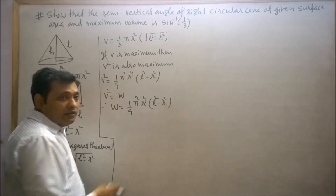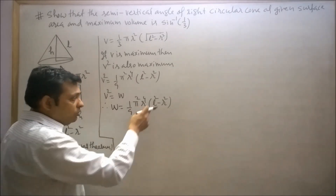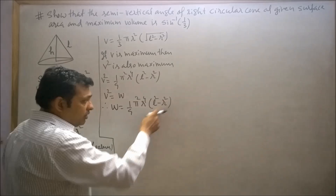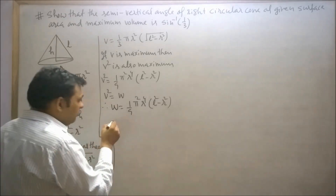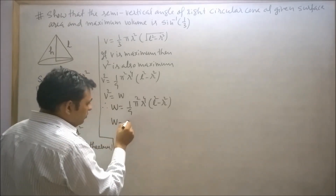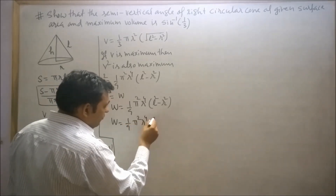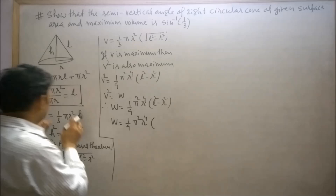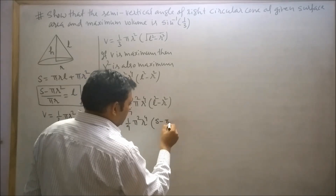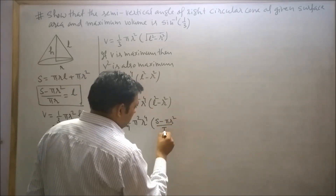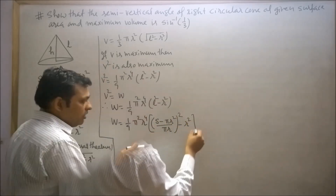Here we see that there are two variables l and r, so we have to change one variable in terms of the other. Change l in terms of r: l = (S − πr²)/(πr). So w = (1/9)π²r⁴ · [(S − πr²)/(πr)]² − r²). Now open the square of the bracket: the numerator becomes S² + π²r⁴ − 2Sπr².